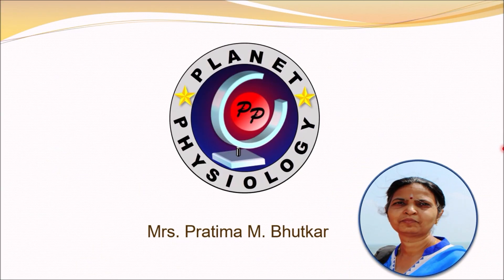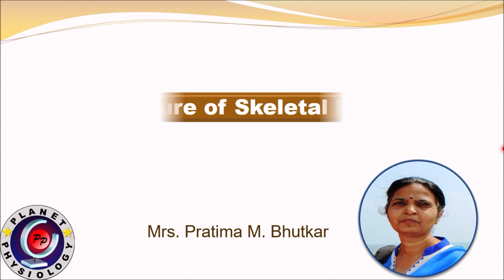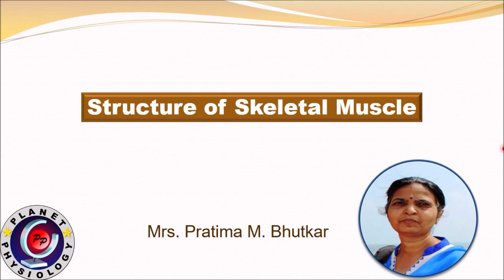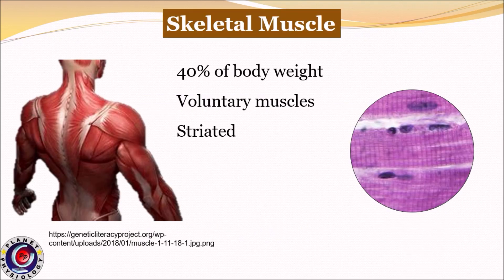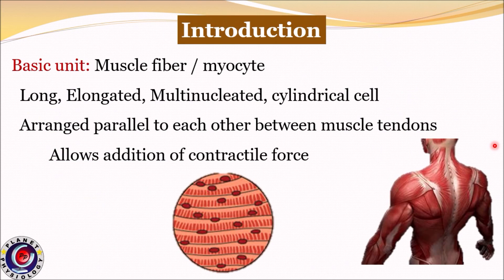Hi, this is Pratima from Planet Physiology. Today we shall study about skeletal muscle. These are the voluntary muscles and contribute about 40% of the body weight. Their microscopic structure shows cross striations, and hence skeletal muscles are also called as striated muscles.